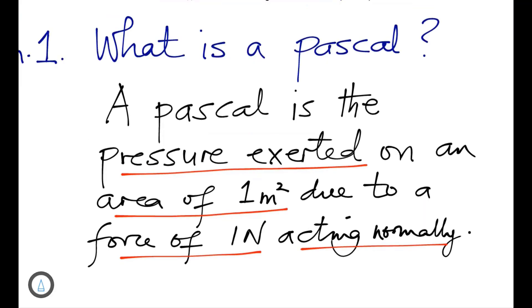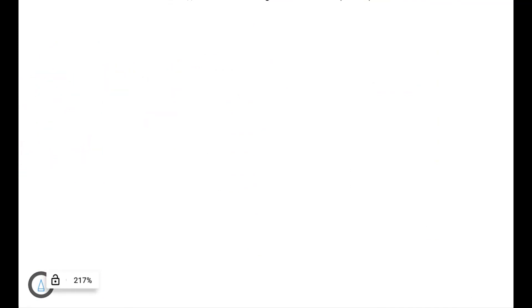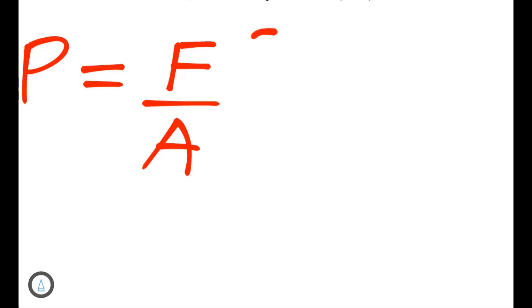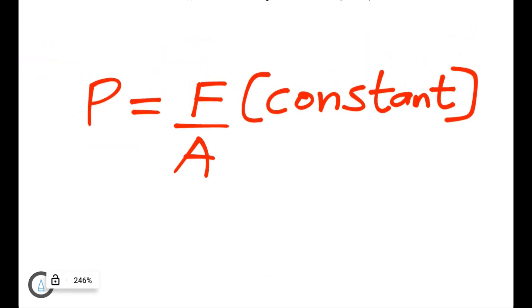For maximum and minimum pressure, recall that pressure equals force over area. If force is kept constant, pressure is inversely proportional to the area of contact. The greater the area of contact, the less the pressure; and the less the area of contact, the greater the pressure.